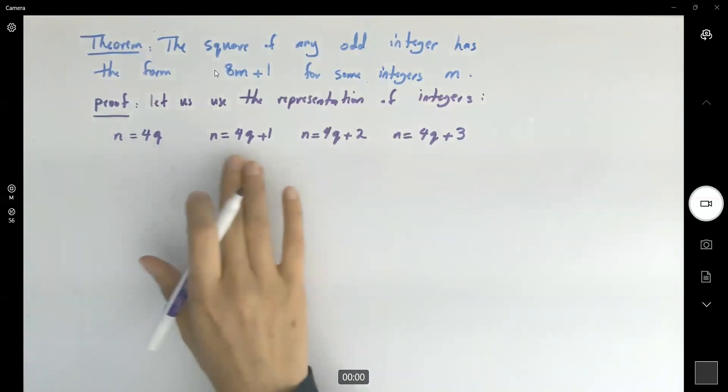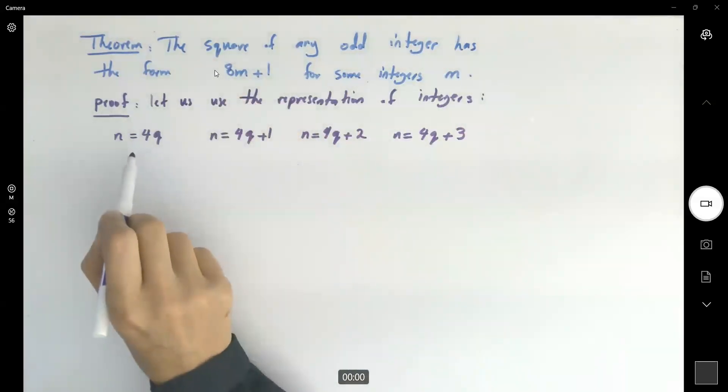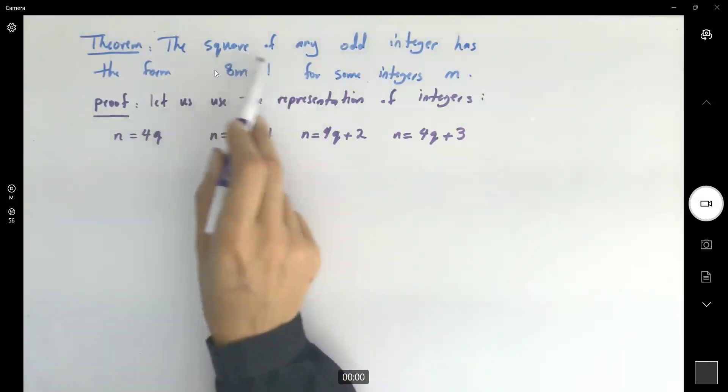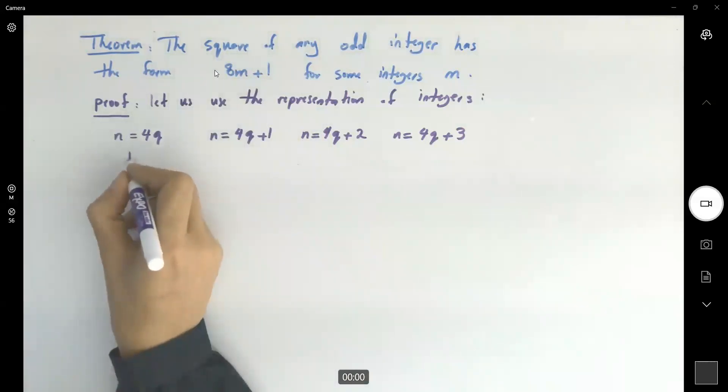Now for each representation we're going to square that integer and show that after simplification each one is of the form 8m plus 1. Let's begin.